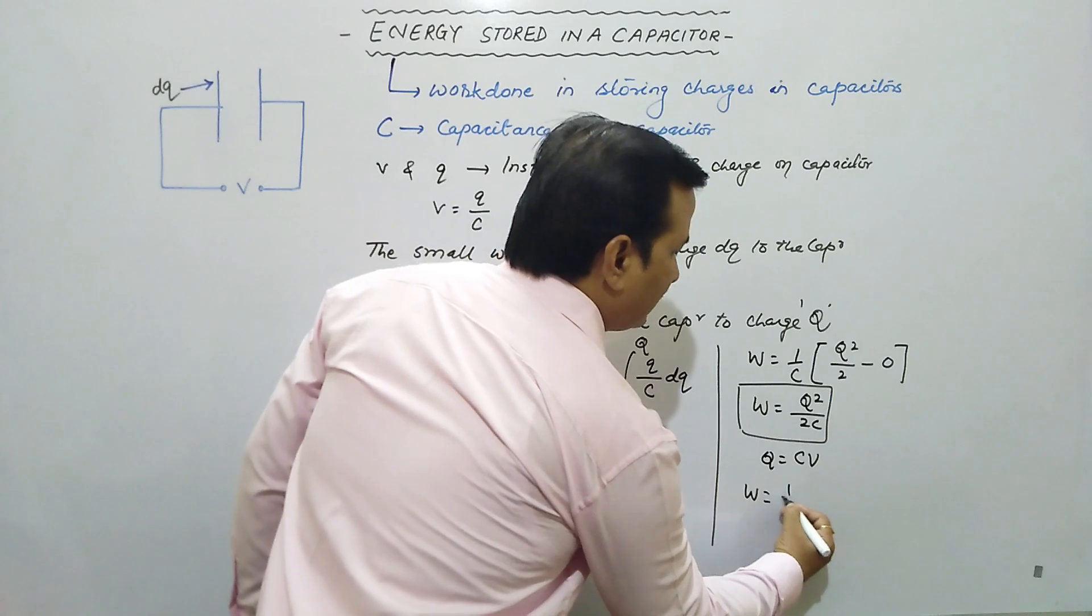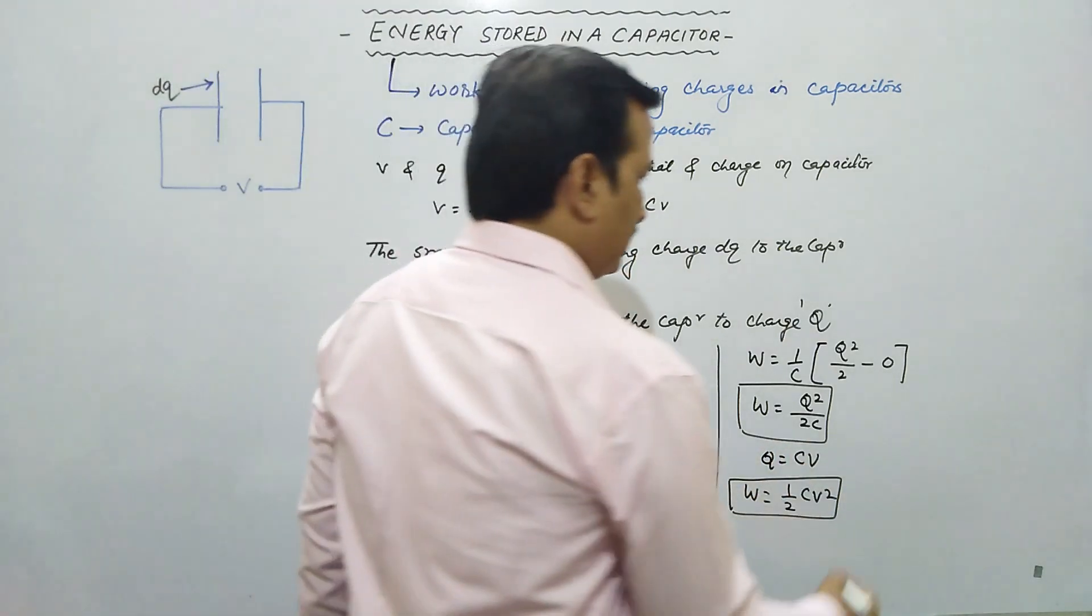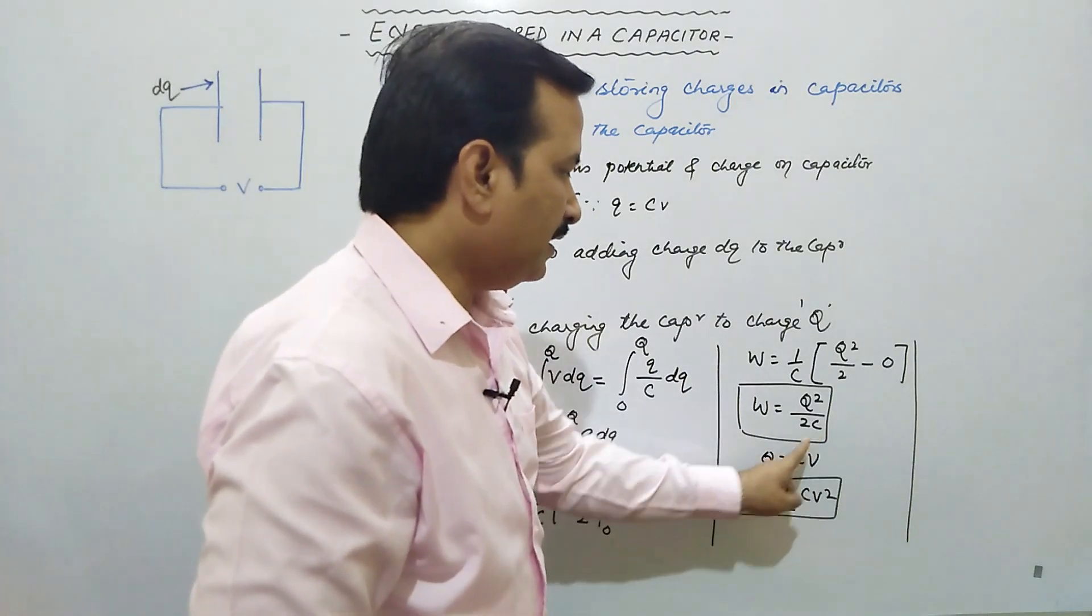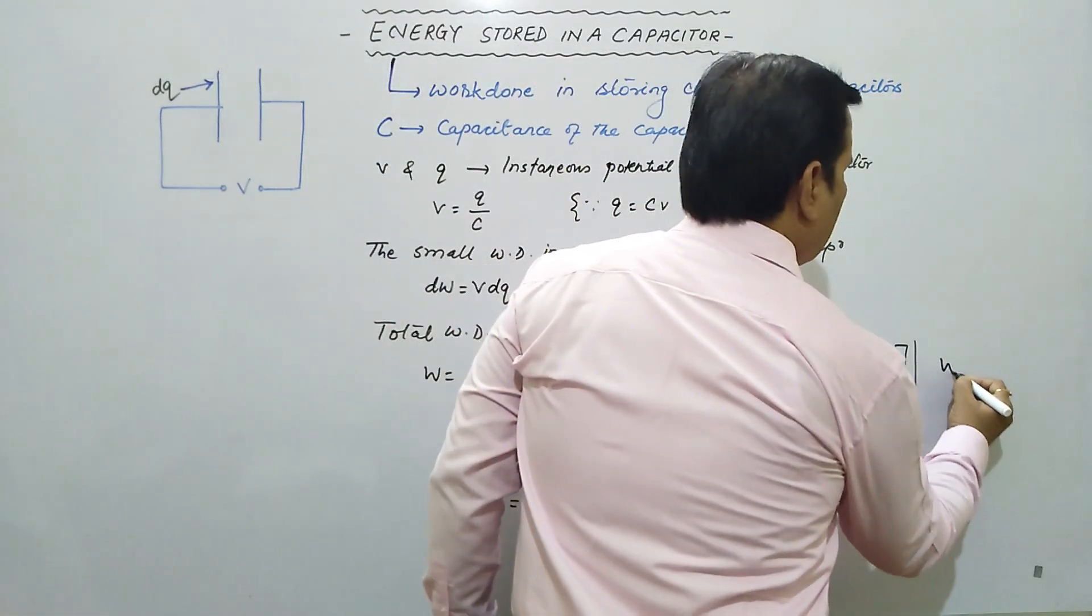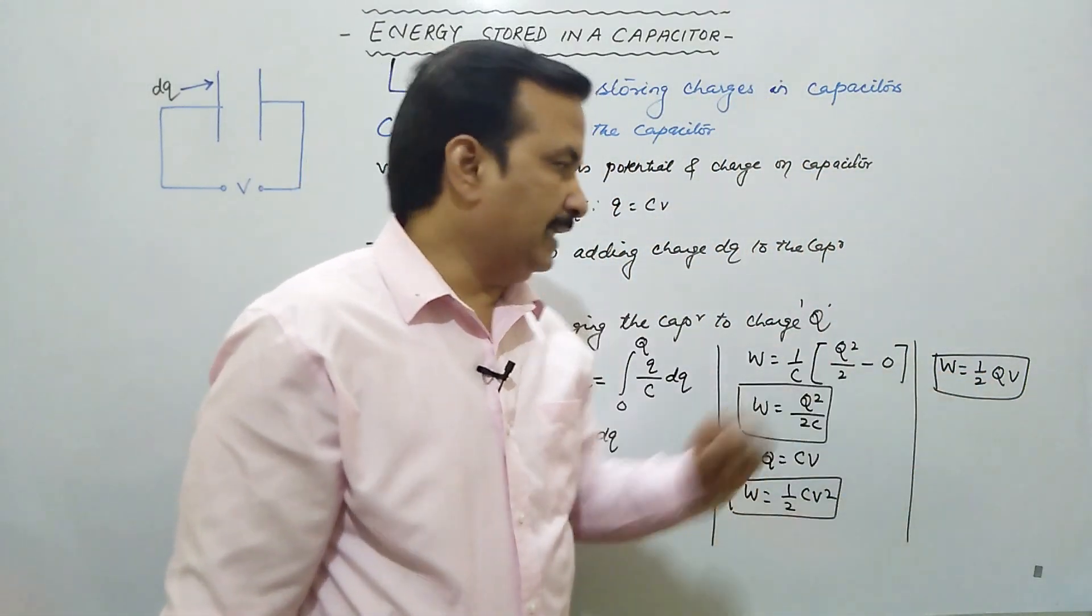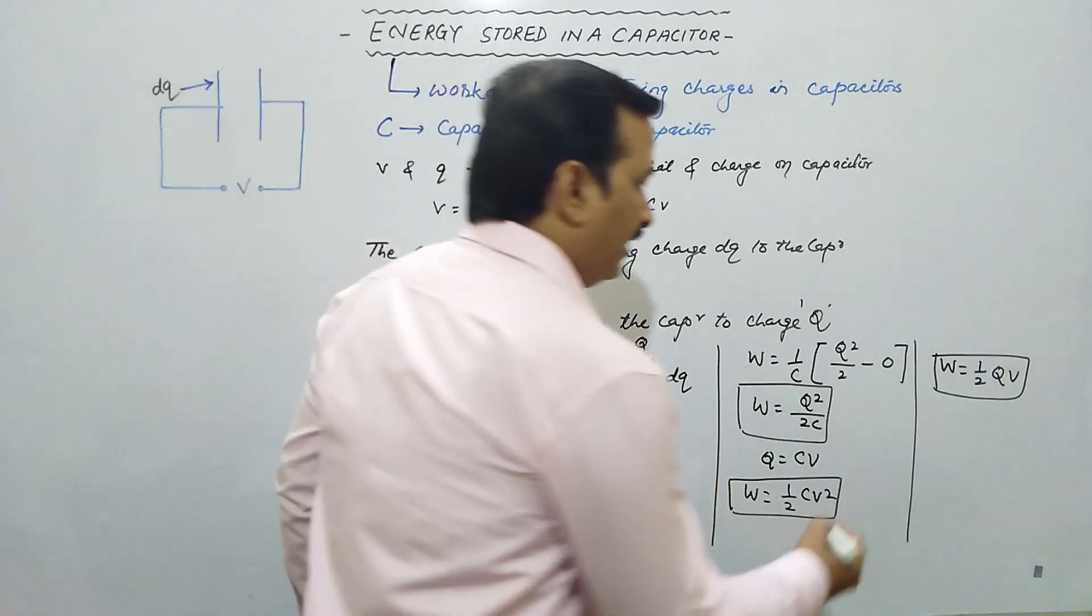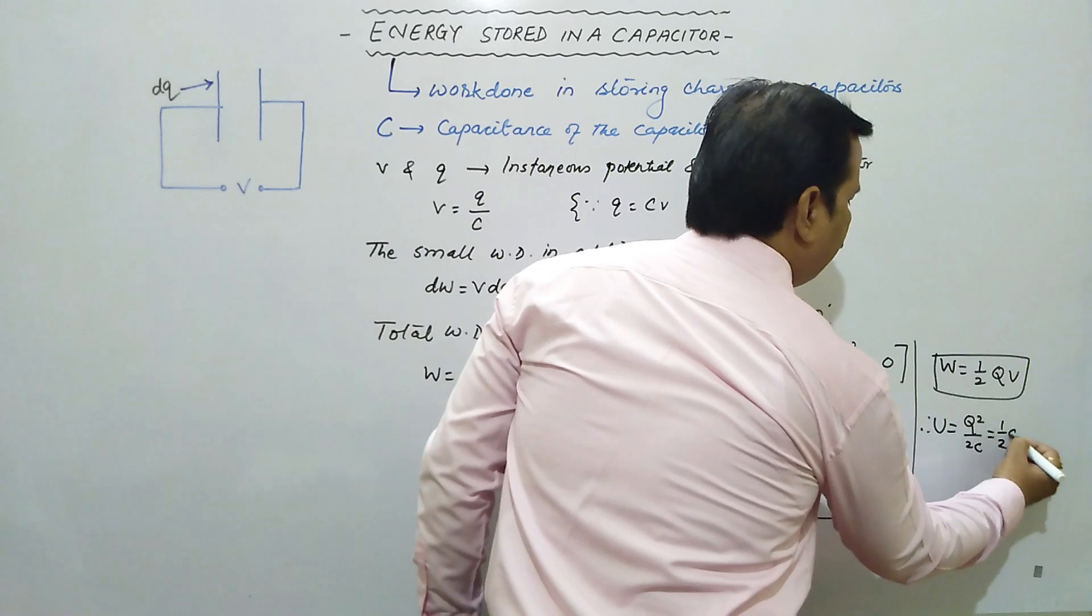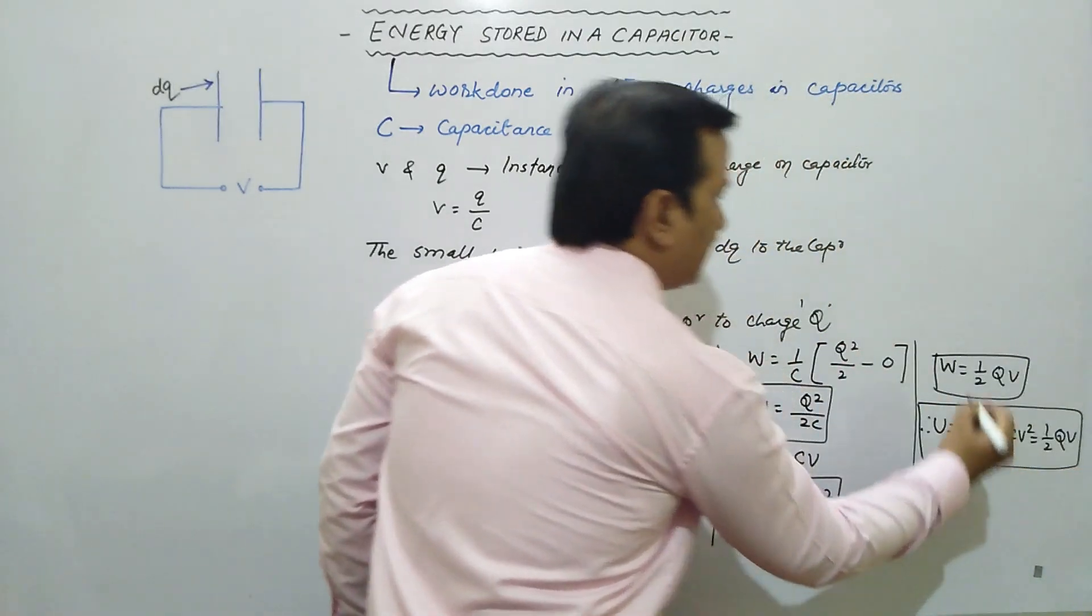We can find other relations also. We have Q is equal to CV. If we put this here, work will be C square V square and one C will cancel, so we will get half CV square. This is another relation. Another relation will be obtained if we put C's value as Q upon V. Q will cancel with Q and V will remain, so you will get W is equal to half QV. These are different forms of work which we are getting.